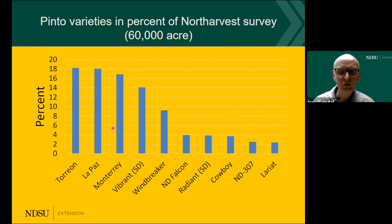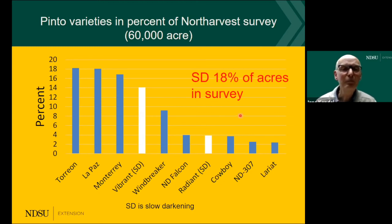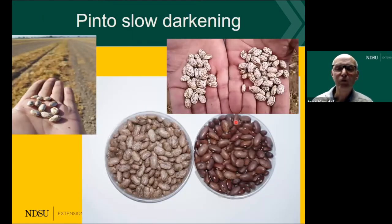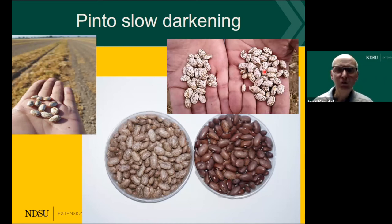An interesting finding in that graph is that two varieties — Vibrant and Radiant — are slow darkening types, representing about 18 percent of the survey. Looking at a picture of the slow darkening pinto, it is more of a white-looking bean with the characteristic that it slowly turns color. Consumers like that bright color on the shelf and find it a very attractive bean.